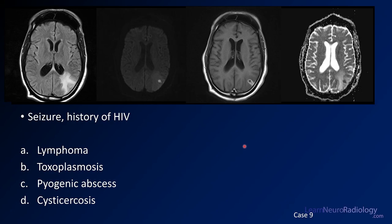Case number nine: this patient has seizure and a history of HIV. There are four images — a FLAIR, a DWI, a post-contrast, and an ADC map. I'll give you a little longer to look at them. Your choices are lymphoma, toxoplasmosis, pyogenic abscess, and cysticercosis.